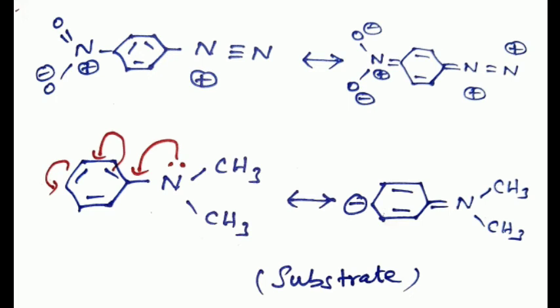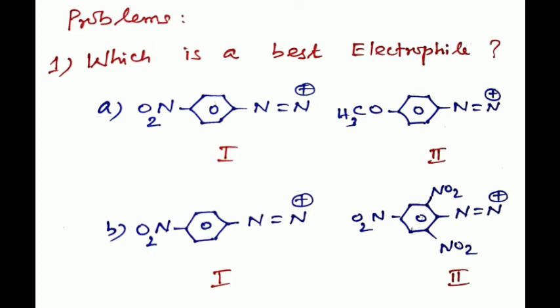Question one: which is the best electrophile? The first compound has a nitro group at the para position of the diazonium — an electron-withdrawing group. The second compound has a methoxy group at the para position — an electron-releasing group. Since the electrophile must contain electron-withdrawing groups, structure one with the NO₂ group is the best electrophile.